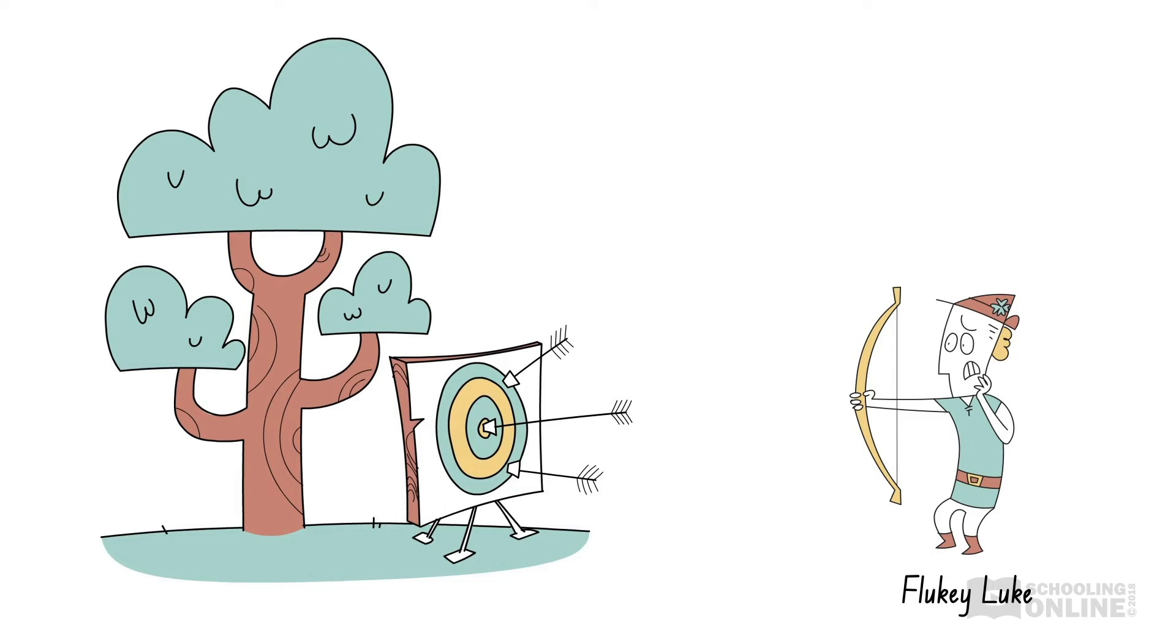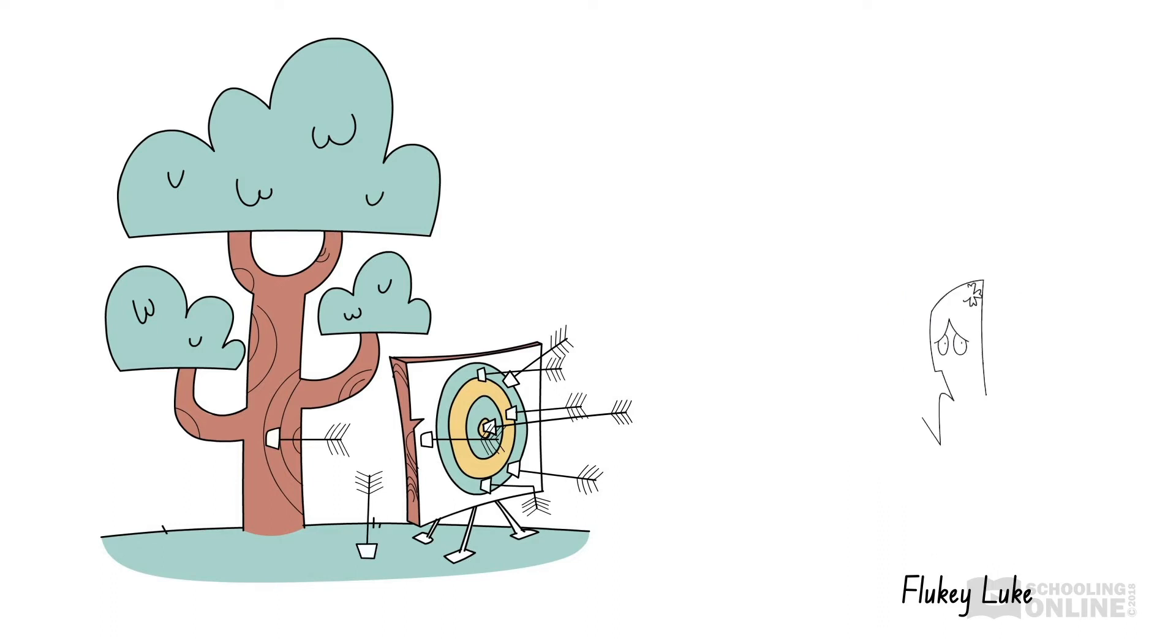That would make him a half-decent archer. To be sure about this, we should ask him to keep firing arrows. After enough time, we'd find out that he's got a lot of room for improvement, and his first shot was beginner's luck.